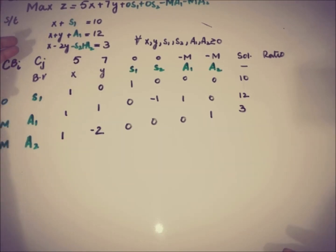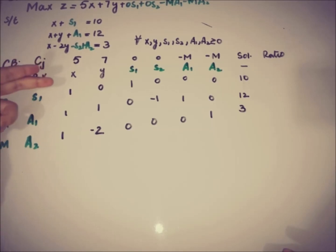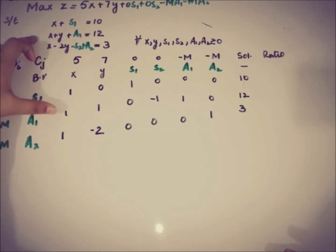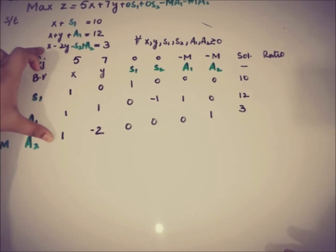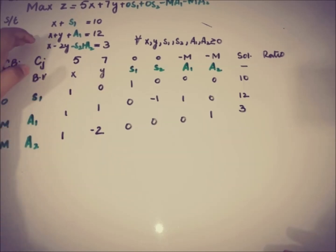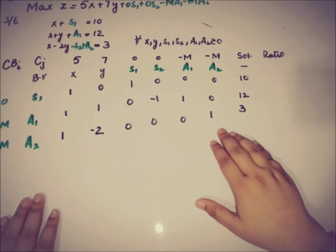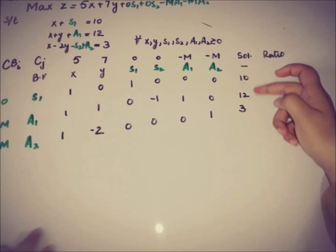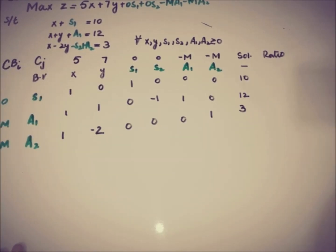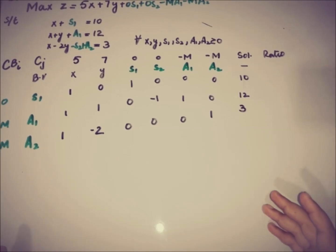You don't need to consider the surplus variable from a constraint that also has an artificial variable. The coefficient of x in the first, second, and third constraints is 1, 1, and 1 respectively. The coefficient of y is 0 in the first, 1 in the second, and -2 in the third constraint. The solution values are 10, 12, and 3.